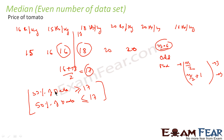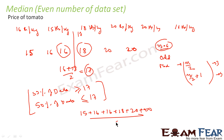For the same data, let's also find the mean and see what it conveys. The mean is 15 plus 16 plus 16 plus 18 plus 20 plus 20 divided by 6, which equals 105 divided by 6, approximately 17.5. If you see, the mean and median are almost the same. Generally, when the data is not skewed — meaning no extreme values — mean and median are almost the same.